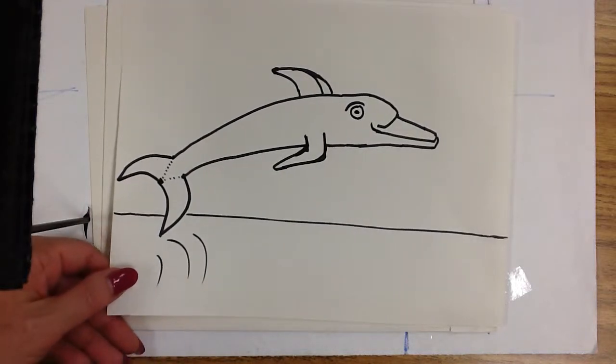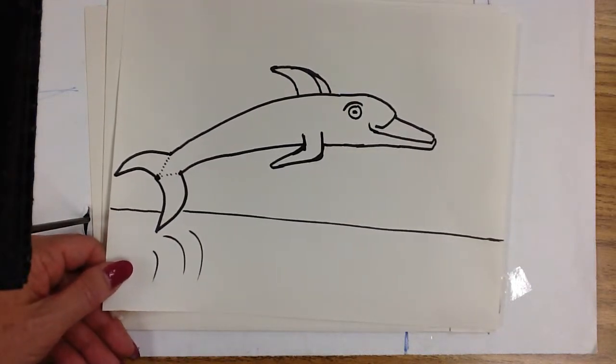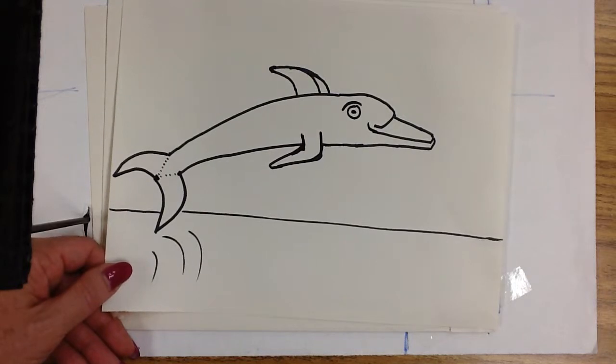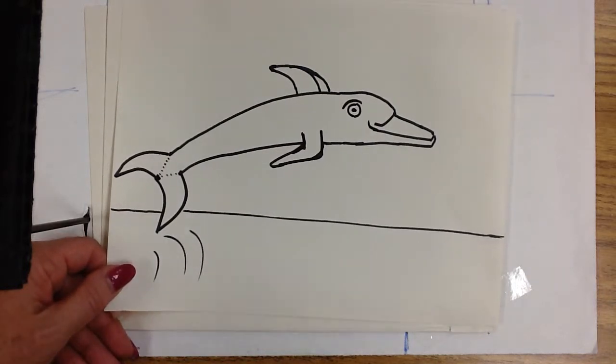We're going to make a dolphin, just a simple dolphin today, in the ocean. He could be swimming in the ocean, or he could be flipping up out of the ocean. It's up to you how you want to decorate him in the end.